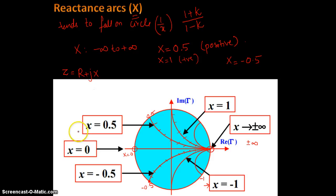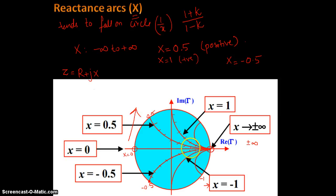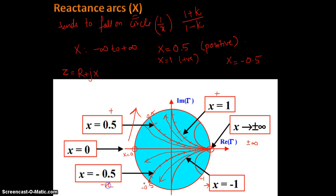So in order to represent the reactance part of impedance values, we follow the arcs within the Smith Chart. Any value on the top half — all of those arcs — represents a reactive value which is positive. Any value below the X equal to 0 line — those curves going below — indicates that the reactance value is negative. This is how you represent your impedance value.